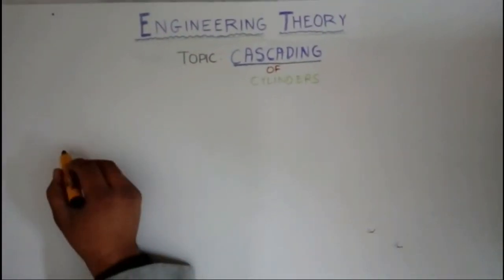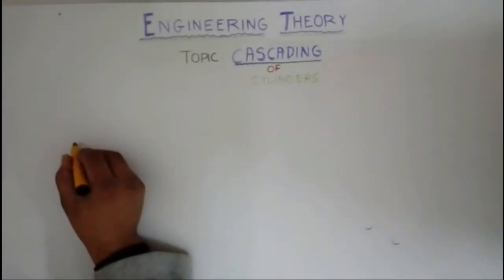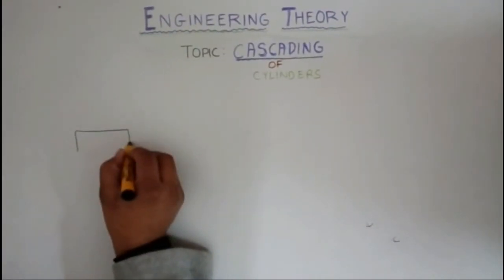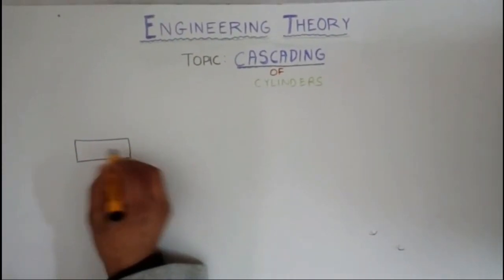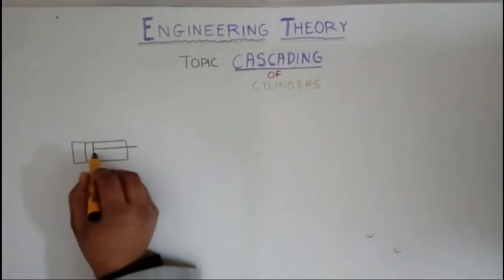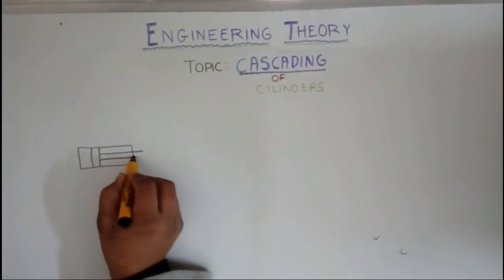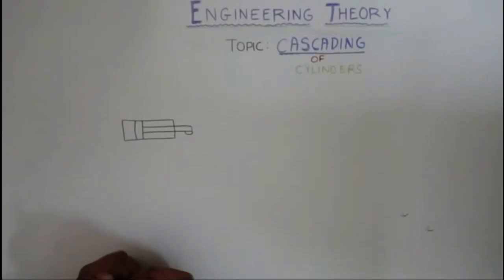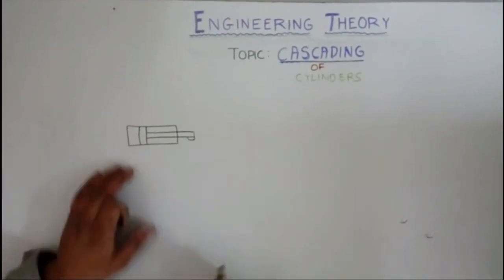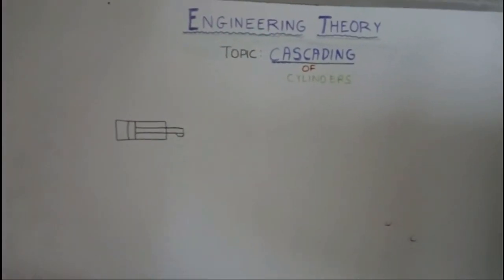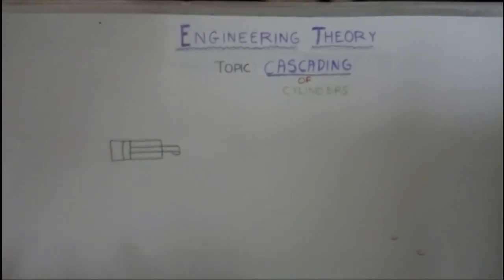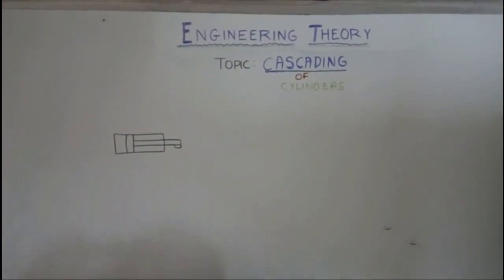A cylinder, as we know as engineers, is a cylindrical housing having a reciprocating element known as a piston. This reciprocating element is the key part of the cylinder.